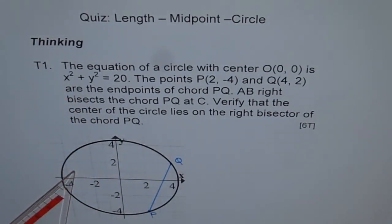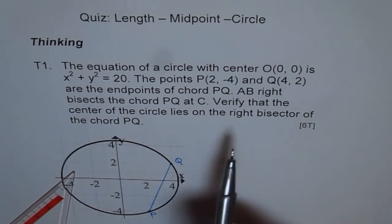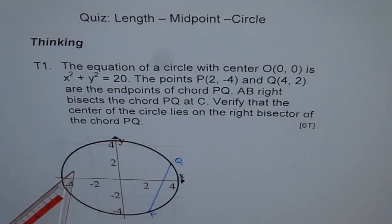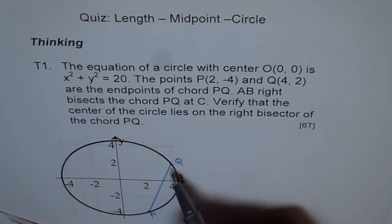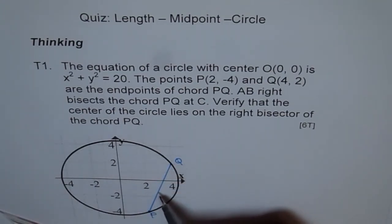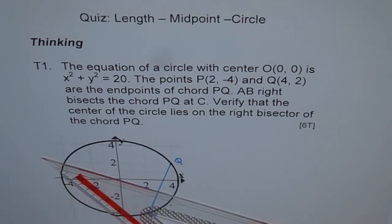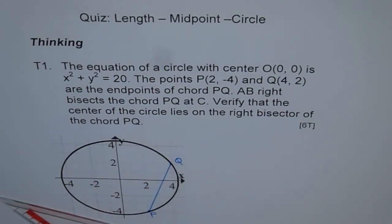Verify that the center of the circle lies on the right bisector of chord PQ. That means we need to find the equation of the right bisector, and that equation should go through the center of the circle. This is what we need to verify. So, let's find the midpoint of PQ first.